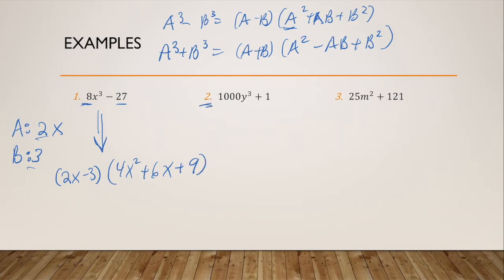For problem two, I've got 1000Y³ plus one. My A is going to be, 1000 is 10³ just as an FYI, so I've got 10Y. My B is one, because one cubed is one. It's not very exciting. And this is going to factor into 10Y plus one.